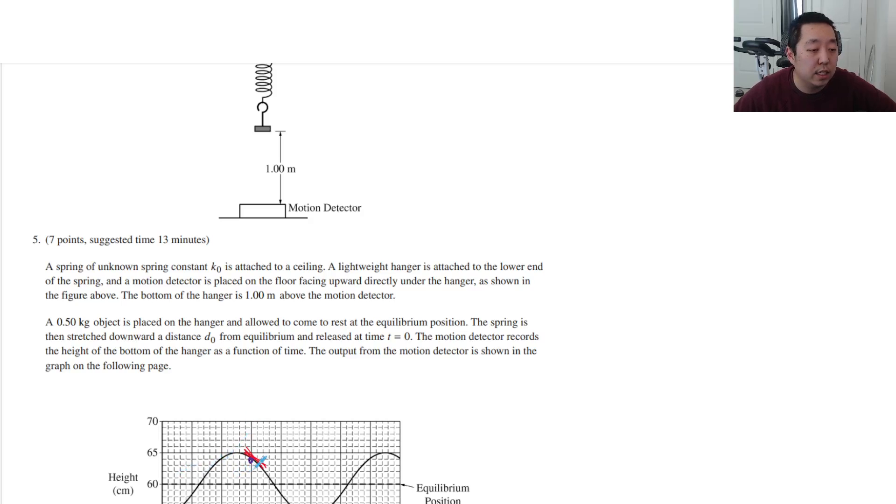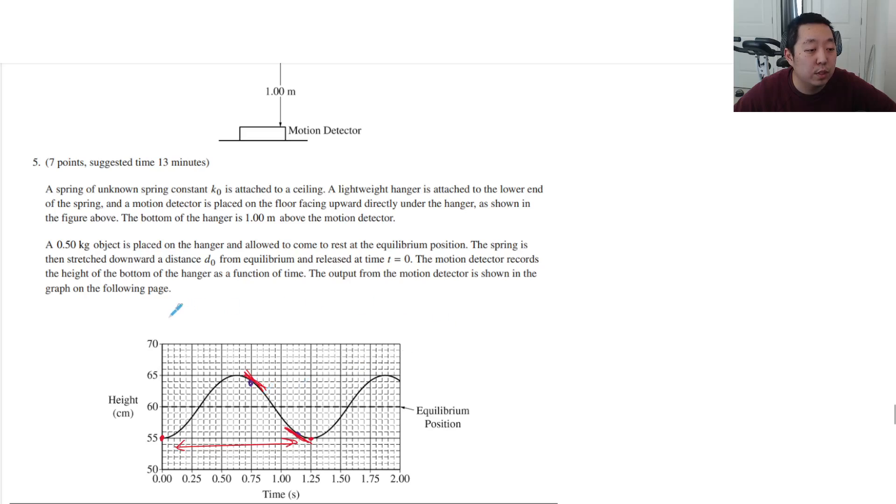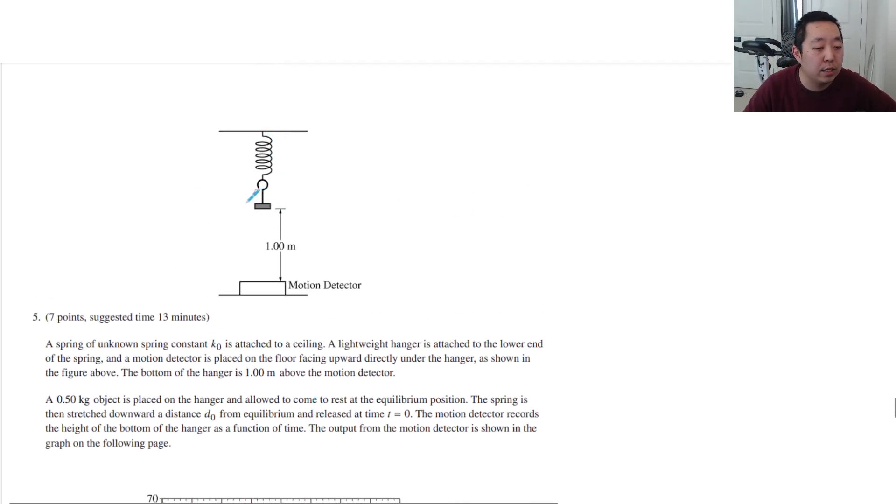What are these heights? The motion detector records the height of the bottom hanger as a function of time. So the equilibrium position is 0.6 meters. So this is when I don't put a mass on. This is the relaxed length. A lightweight hanger, then we place something on the hanger. So what we know is before it displaced, how much did it displace? Well, the equilibrium position is 0.6 meters above the ground, right? So here's the equilibrium position originally. So that means it stretched 0.4 meters. Because if this height is 0.6 meters, that means the spring to reach the equilibrium position with the original spring constant was 0.4 meters.